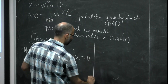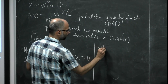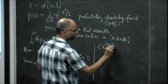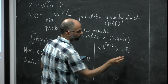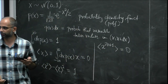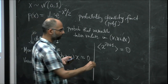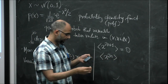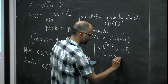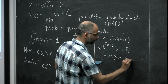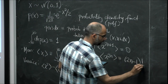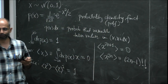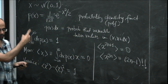Going beyond, you can define the nth moment. All odd moments are zero by symmetry. All even moments have a very nice form: for a standard Gaussian they are (2n−1) double factorial.